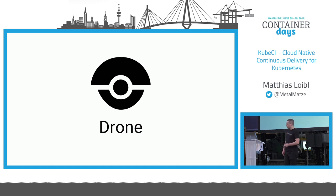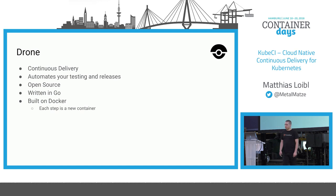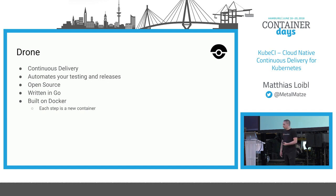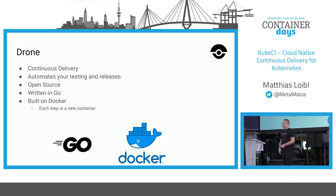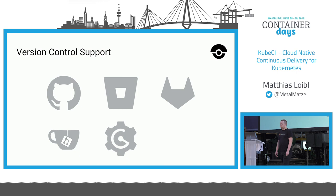Drone is a continuous delivery pipeline — it automates everything you need to do in your CI/CD pipeline. It's open source, written in Go, and it uses Docker. Each step in the pipeline is a new Docker container, which could contain Go, Node.js, Java, or whatever — so anything that can be included in a container can basically be a step run in a Drone pipeline.